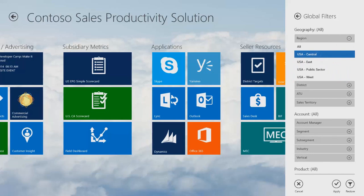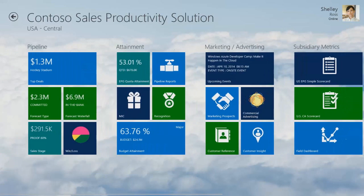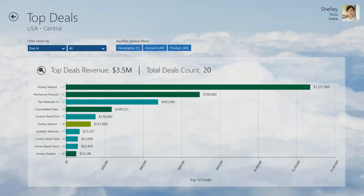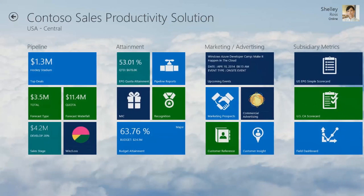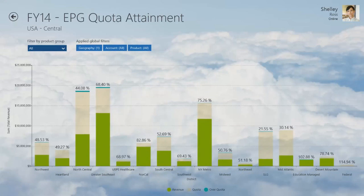I'll pick US Central and then apply that. You can see now in the top left-hand corner that US Central is now chosen. What I'm seeing from a data standpoint in terms of top deals, and what I'm seeing from the standpoint of attainment and quote attainment, is all based on US Central.